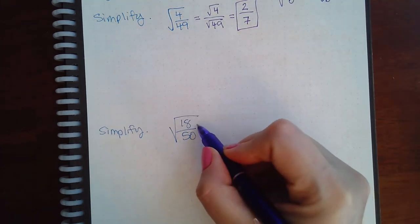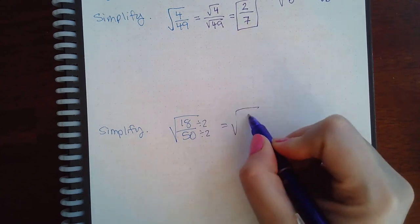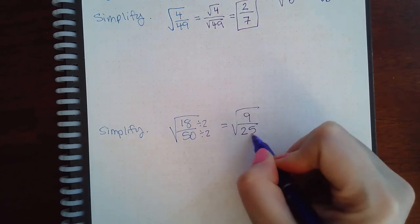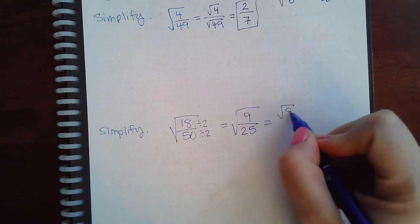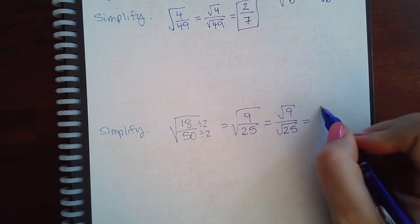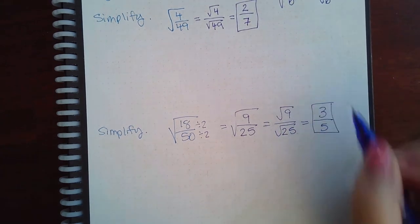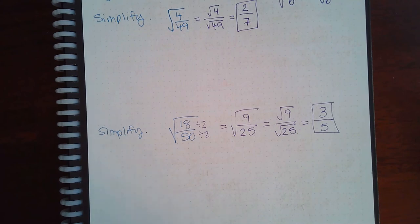So when I do that I get 9 over 25, and then I will apply that square root rule. The square root of 9 is 3 and the square root of 25 is 5, and that is the simplified answer for the problem.